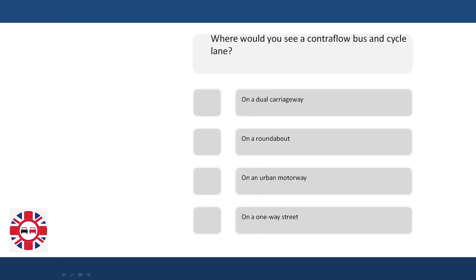Where would you see a contraflow bus and cycle lane? On a dual carriageway? On a roundabout? On an urban motorway? On a one-way street?